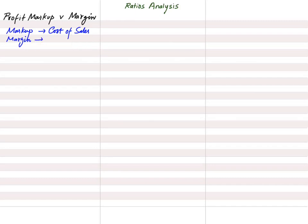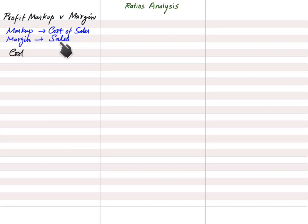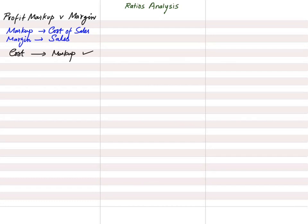There are two ways to calculate gross profit: one is by calculating it on cost of sales, and another is by calculating it on sales. If we are applying a percentage on cost of sales, that percentage is known as profit markup. If we apply that percentage on the sales figure, that percentage is known as margin percentage.